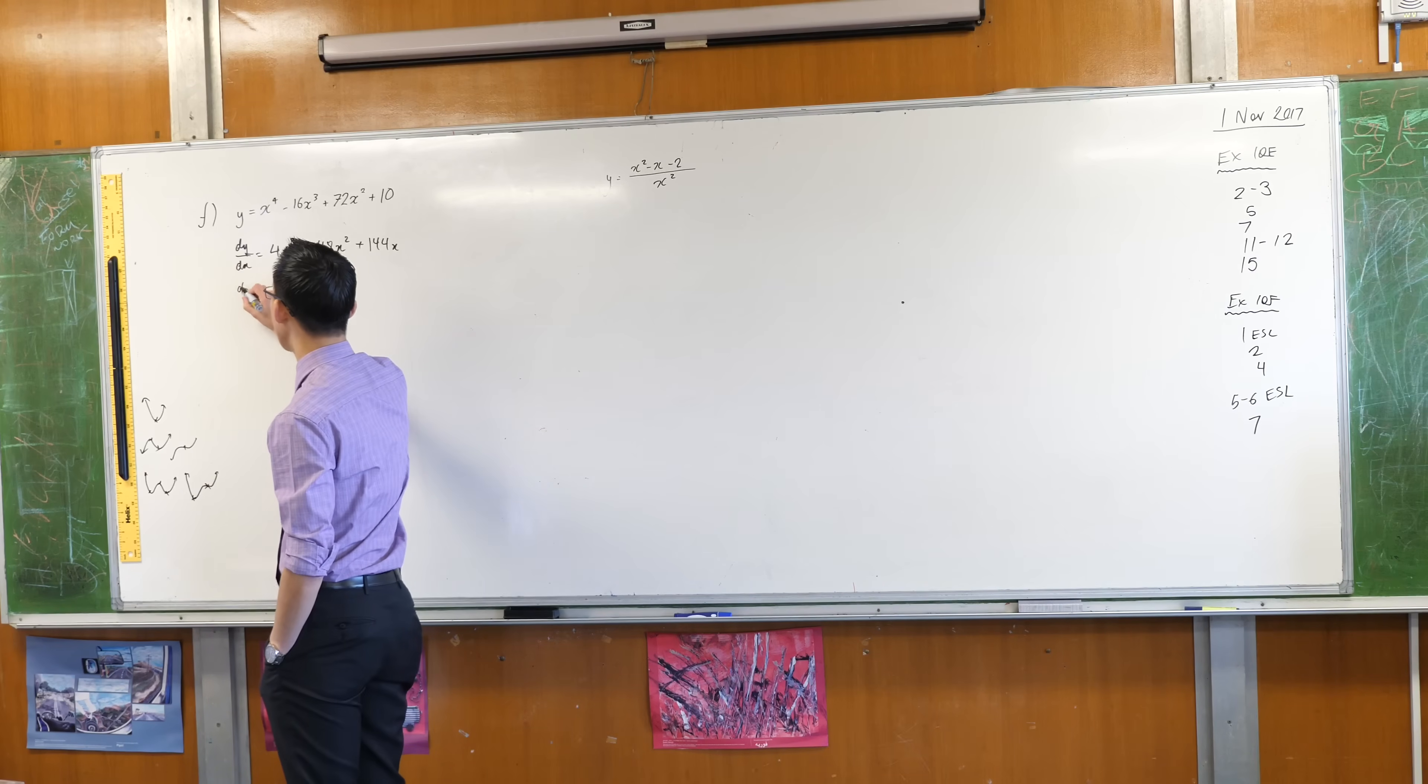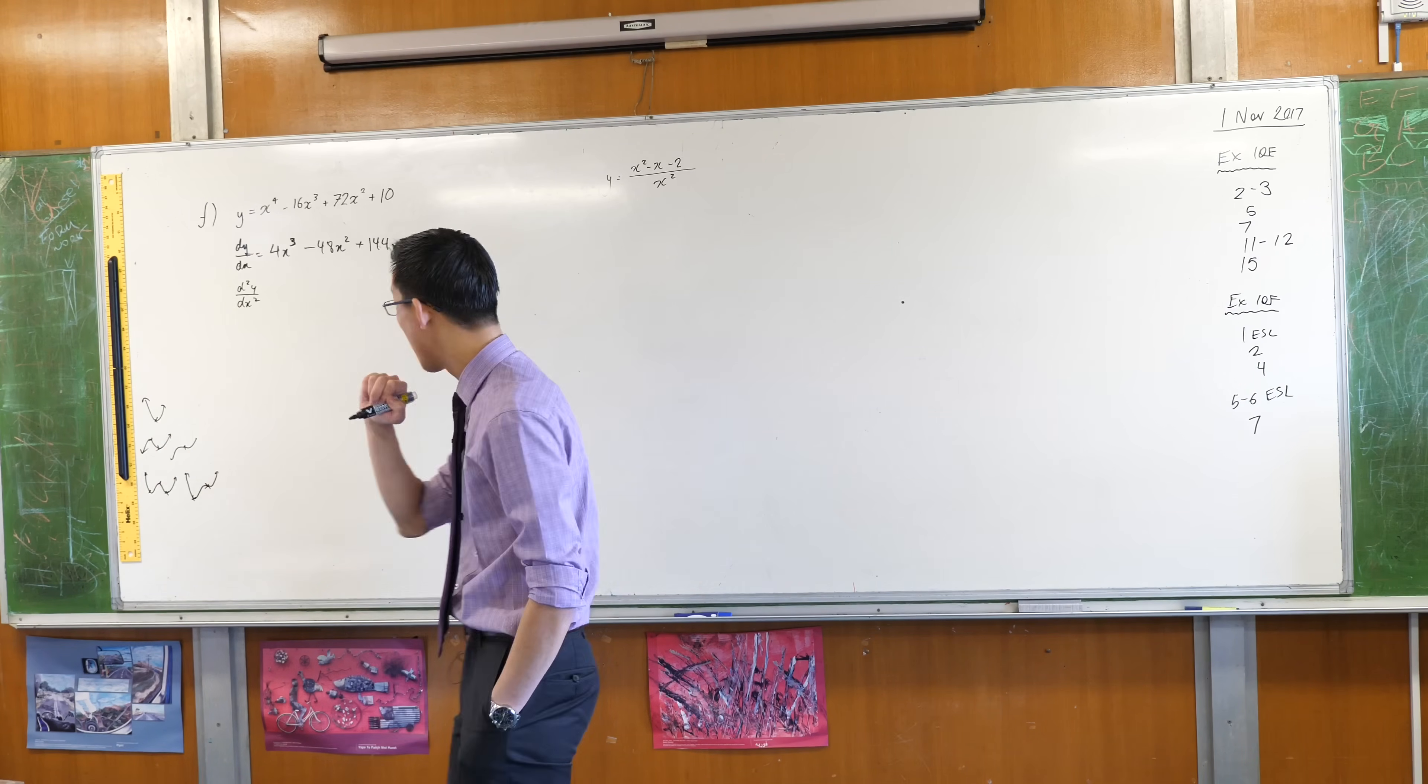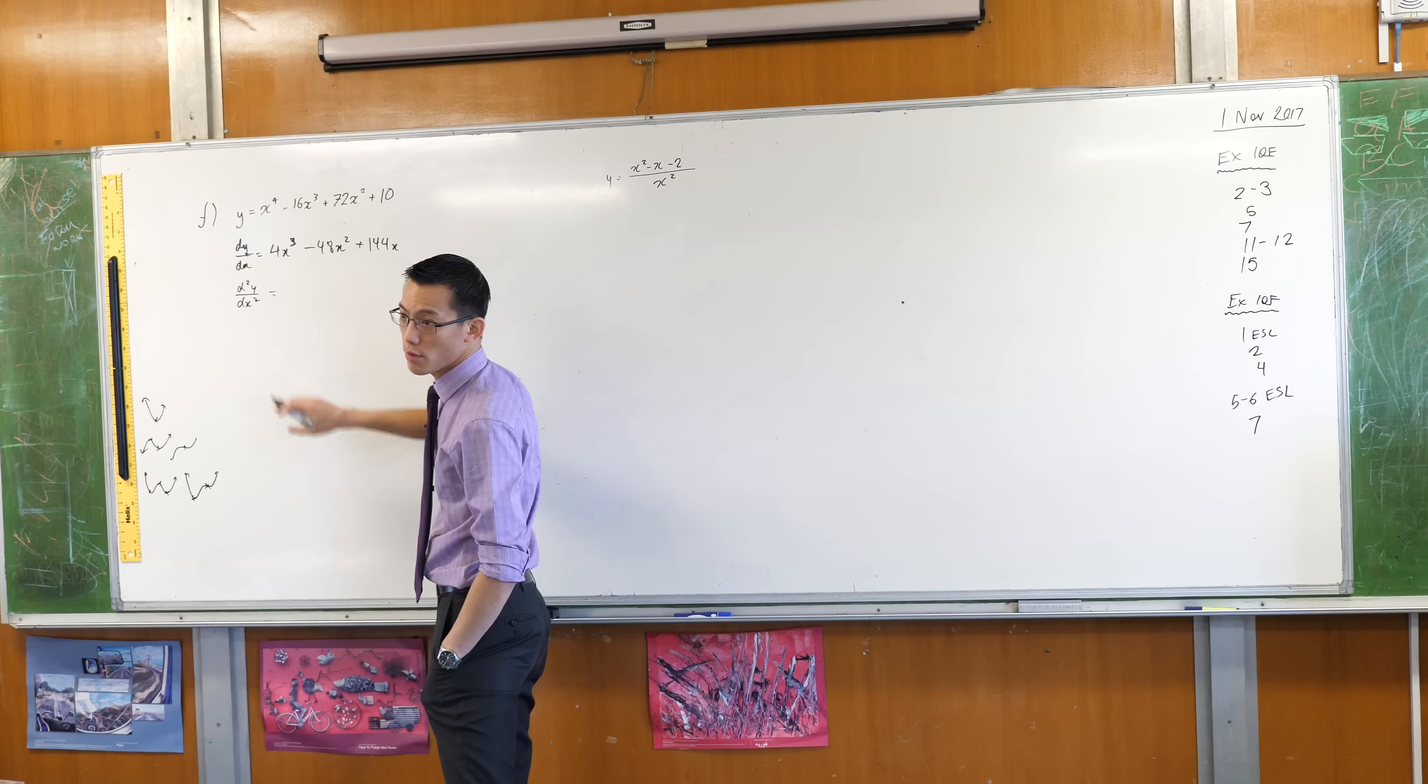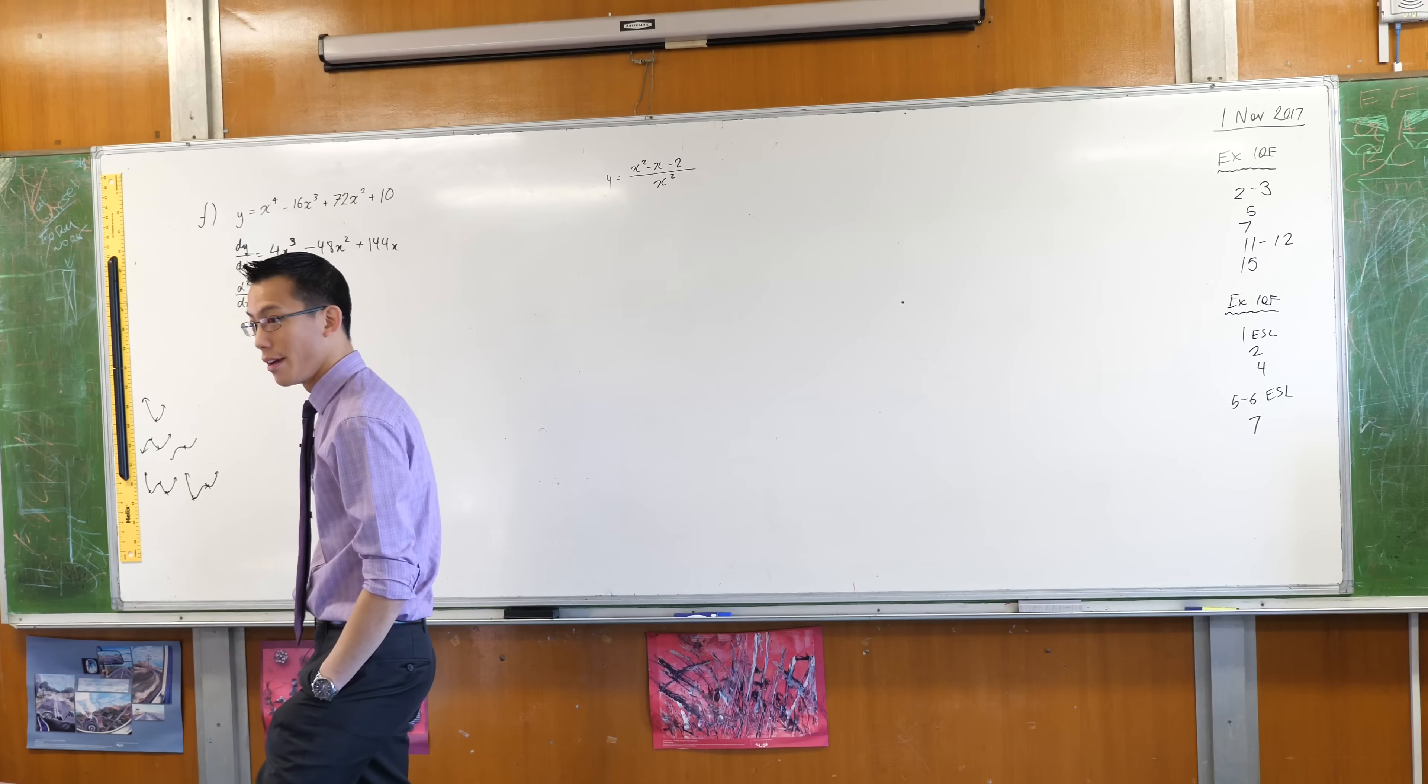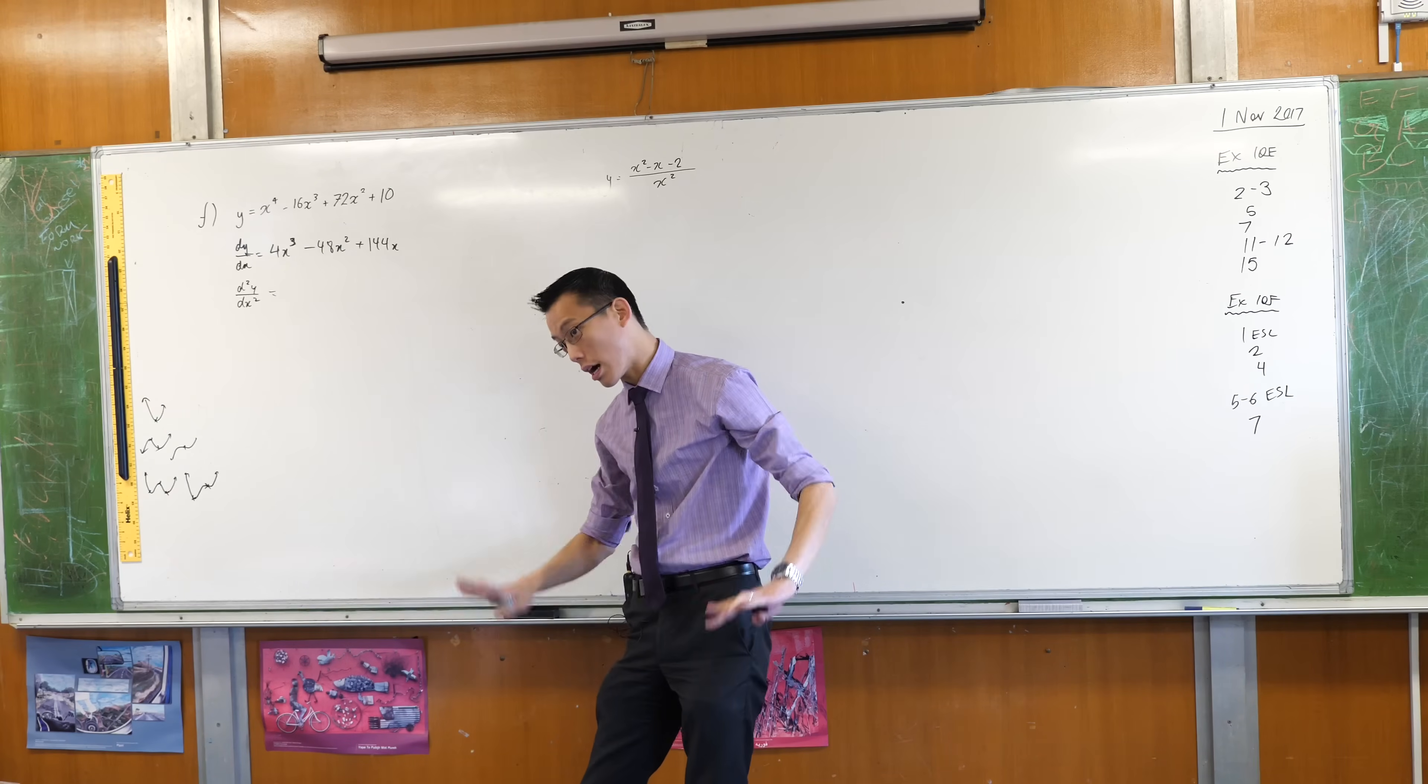Before I get to like testing this and all, I kind of think while I'm in a differentiating mood I might as well do the second derivative. Now I'm doing this so that I could determine nature. Why did I use the second derivative test and not the first derivative? Why did I choose to go second derivative rather than first?